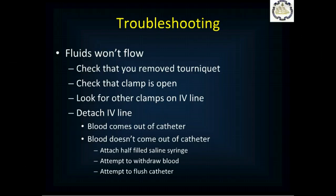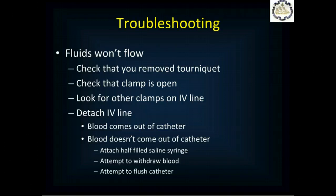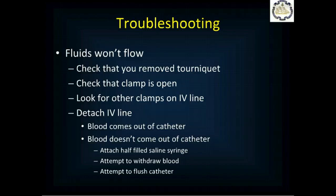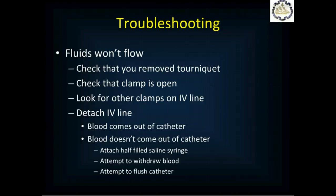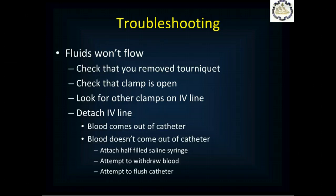What can go wrong? If fluids won't flow, most likely you forgot to remove the tourniquet — check that first. Then check that the clamp is open, and look along the entire line for any closed slider clamps. If that doesn't work, detach the IV line: if blood comes back out of the catheter, you're in the right place. If blood doesn't come out, use a saline-filled syringe, try to withdraw blood and flush. If that doesn't work, your catheter is not in the right place.